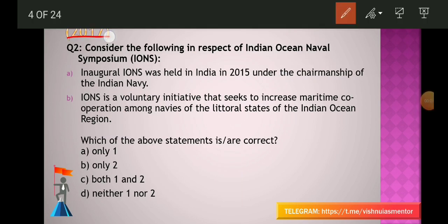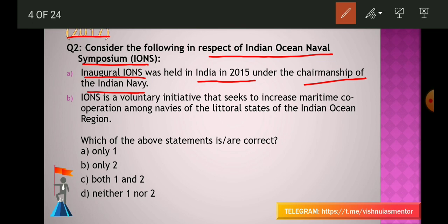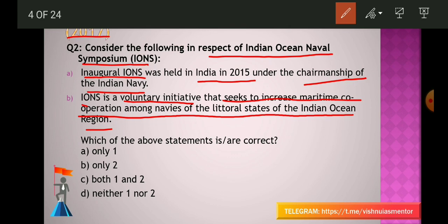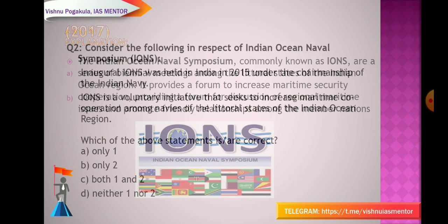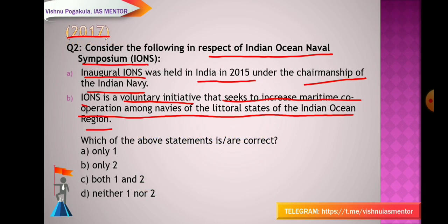Next question is from the 2017 question paper. Consider the following in respect of Indian Ocean Naval Symposium (IONS): Statement 1 — Inaugural IONS was held in India in 2015 under the chairmanship of Indian Navy. Statement 2 — IONS is a voluntary initiative that seeks to increase maritime cooperation among the navies of the littoral states of the Indian Ocean region. Which of the above statements is correct?